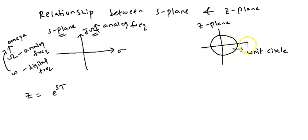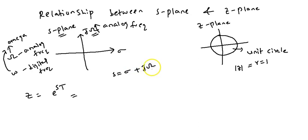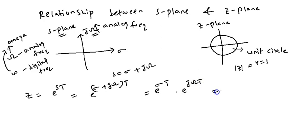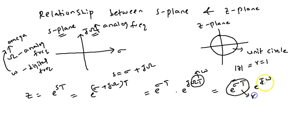In the z-plane, the unit circle has radius 1, meaning mod z equals 1. We have already seen the relationship between z and s: z = e^(sT), and s = σ + jω, where ω is the analog frequency. Substituting and expanding, we get the expression in terms of digital frequency, where the result has a radius component and a phase angle component.